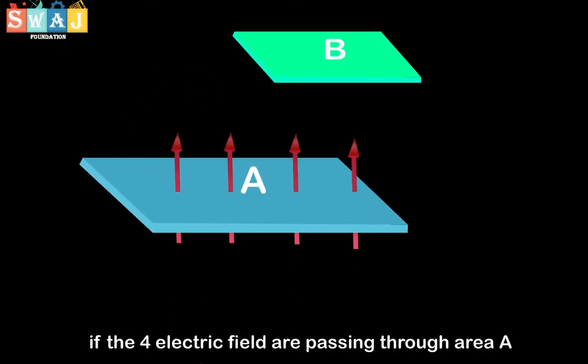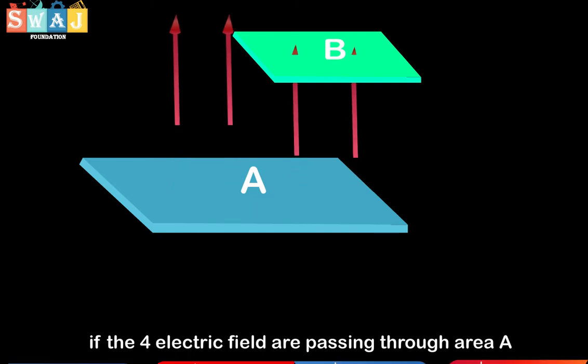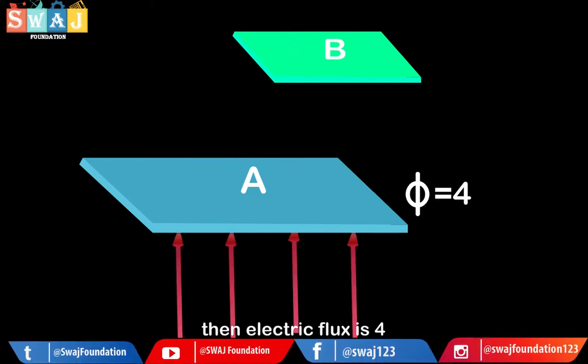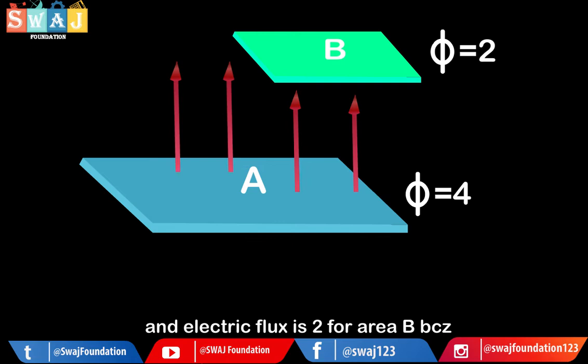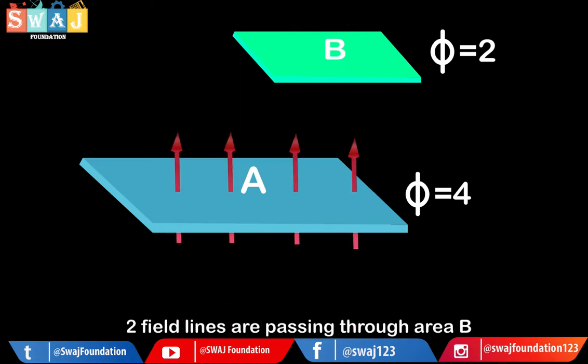If four electric field lines are passing through area A, then electric flux is four. And electric flux is two for area B because two field lines are passing through area B.